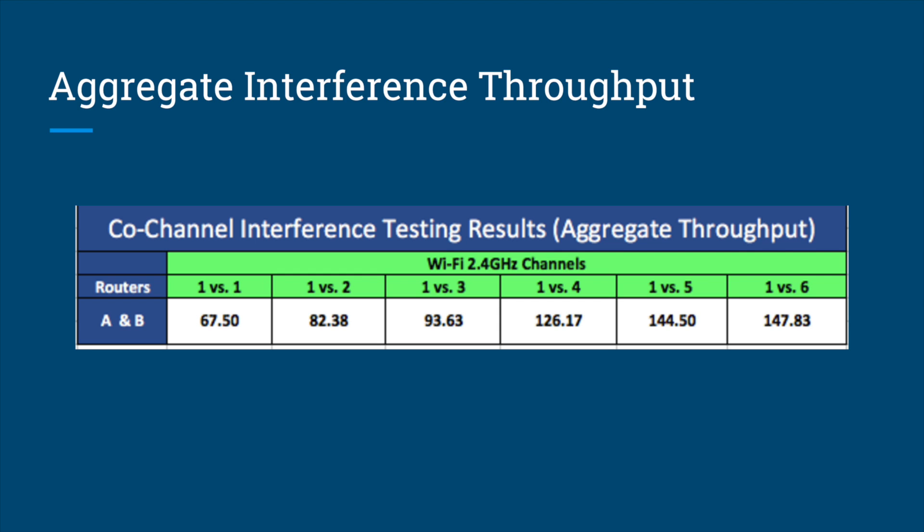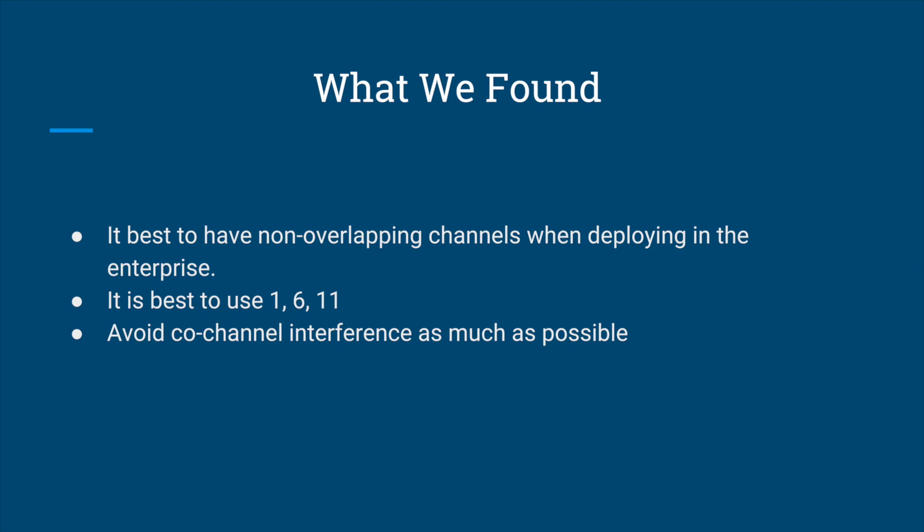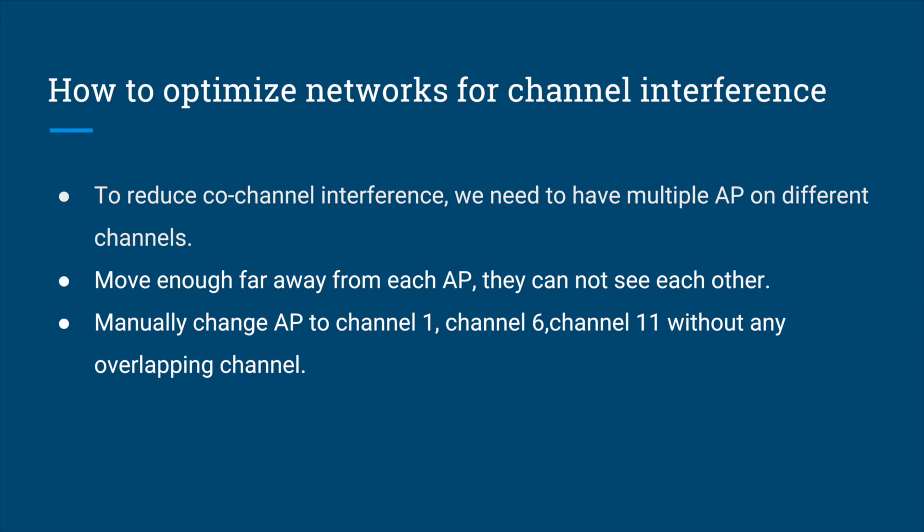We learned that it is best to set the routers on channels 1 and 6 when they are located near each other. Channel 1 is still great to use for a Wi-Fi network, but when implementing multiple APs in an enterprise, the optimal solution is for not all the APs to be on the same channel.